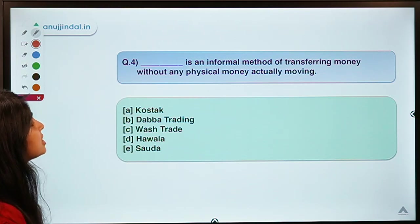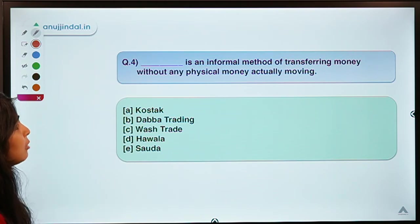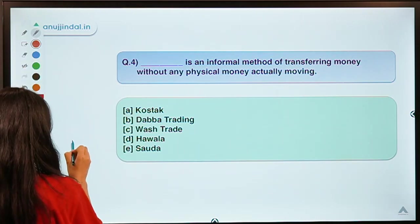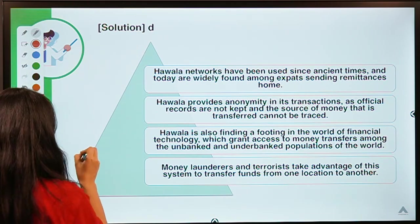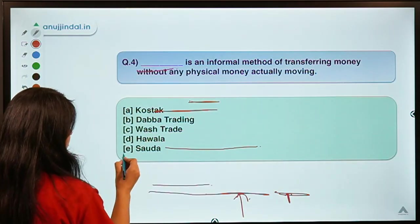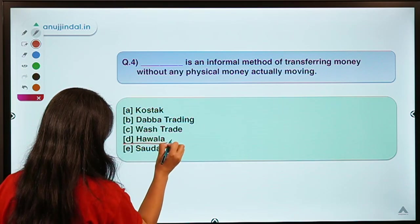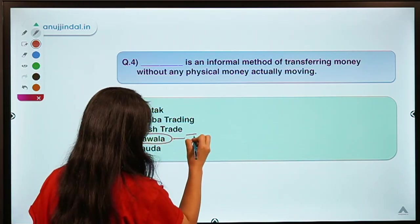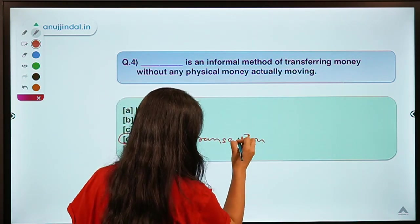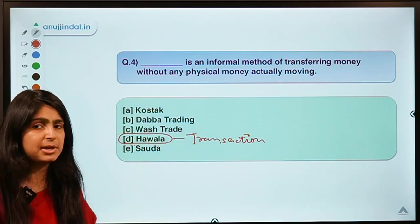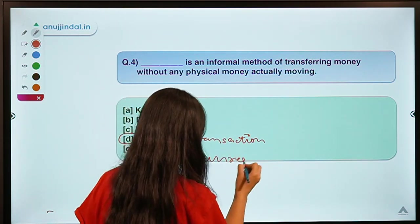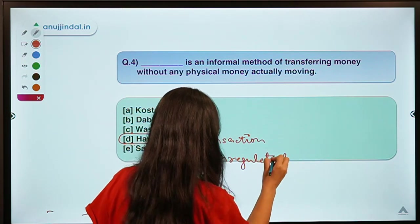The next question: this blank is an informal method of transferring money without any physical money actually moving. The correct option is D, which is Hawala. Hawala transactions are transactions in which money is sent from one place to another without physically moving it. It is an unregulated area and illegal in many countries.